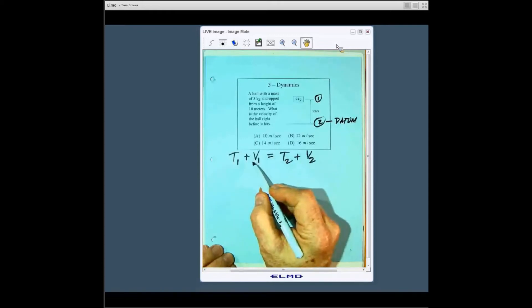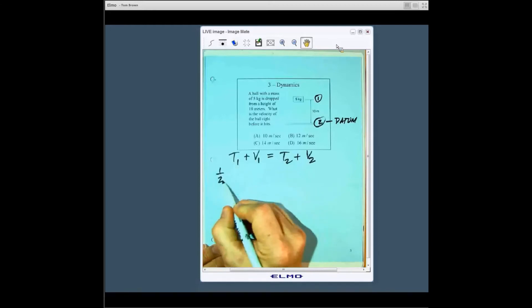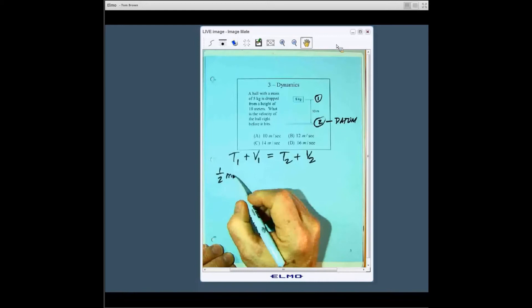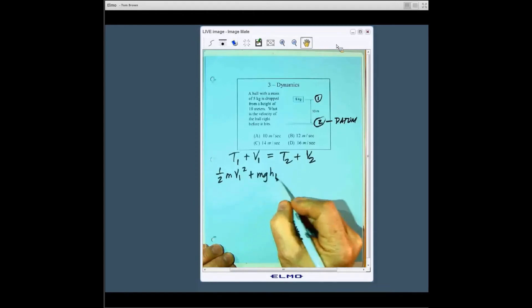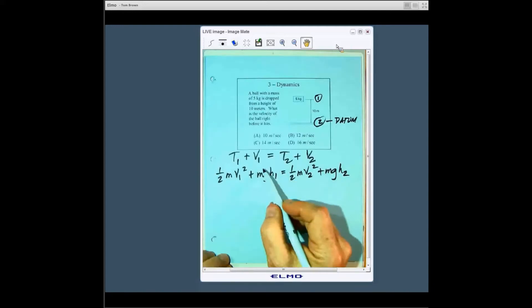The kinetic plus potential in this case, we've only got the potential energy of gravity at one will equal what we have it at two. So what we have is one half mv1 squared plus mgh1 equals one half mv2 squared plus mgh2. These right here are the potential energy of gravity.